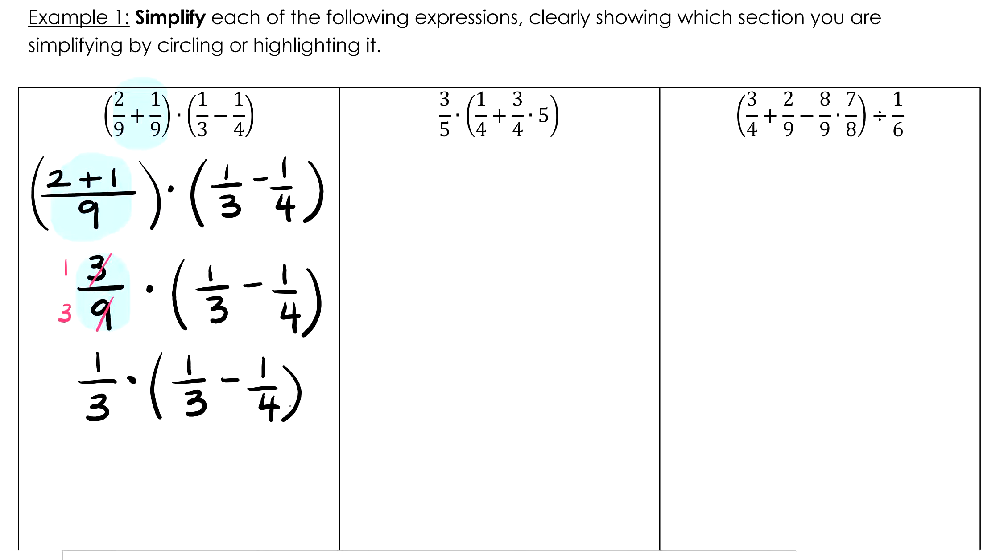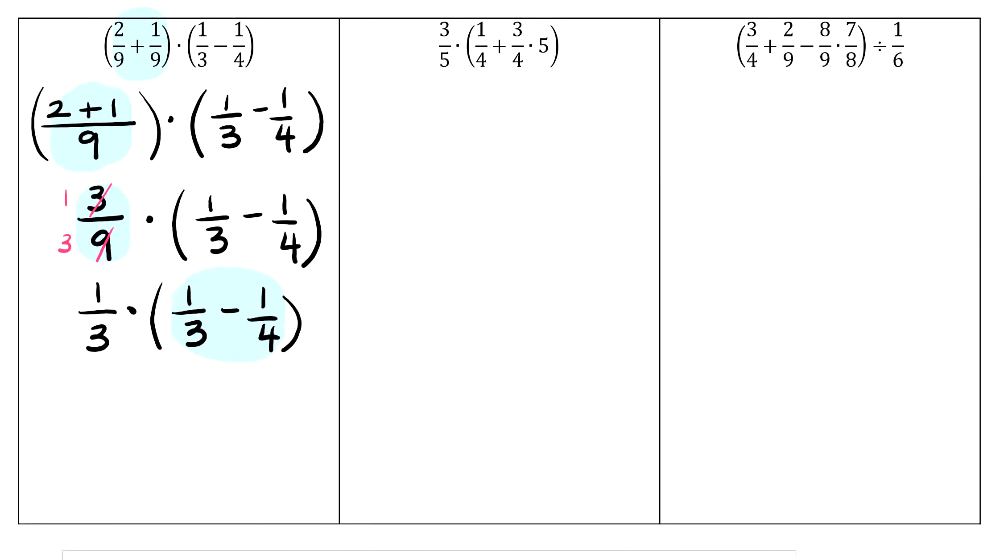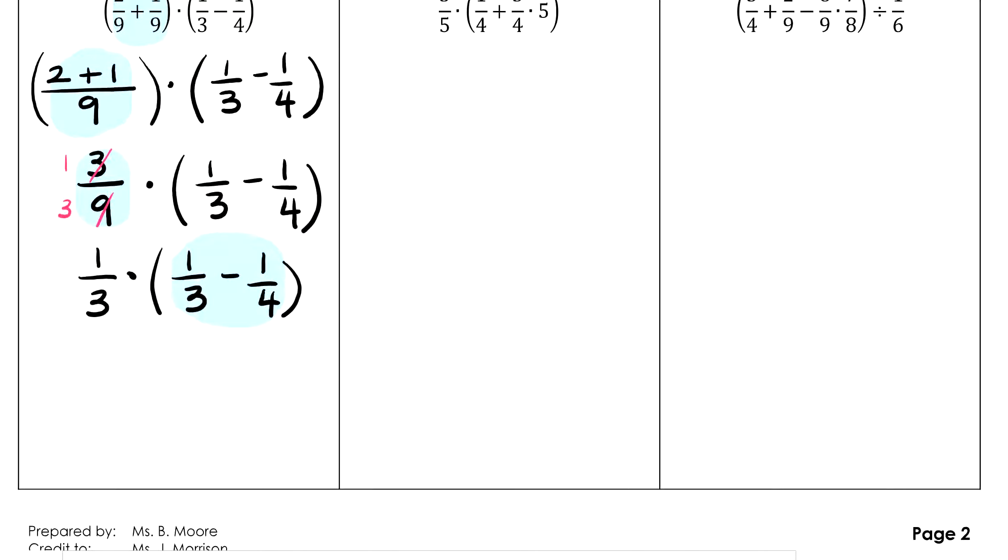Now we're ready to do the second set of parentheses: 1/3 minus 1/4. We don't conveniently have a common denominator like we did for the first set of parentheses, so we'll have to create one. Let's pick 12.